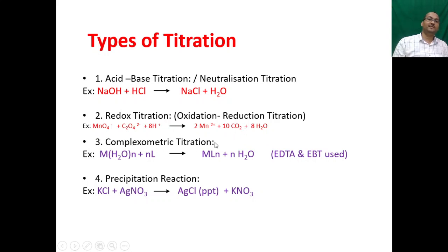In complexometric titration, the metal binds with the ligand, giving rise to metal-ligand complex. Usually EDTA is the ligand and Eriochrome Black T is used as the indicator. During precipitation titration or reaction, potassium chloride reacts with silver nitrate, giving rise to silver chloride precipitate and potassium nitrate.